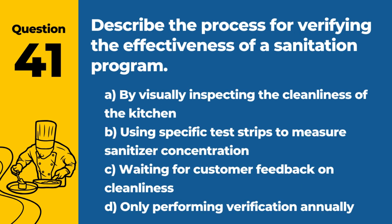Question 41. Describe the process for verifying the effectiveness of a sanitation program. The answer is B: Using specific test strips to measure sanitizer concentration. This method ensures that the sanitation program meets the required standards for effectively reducing pathogens.